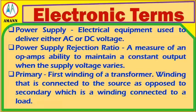Power Supply: electrical equipment used to deliver either AC or DC voltage. Power Supply Rejection Ratio: a measure of an op-amp's ability to maintain a constant output when the supply voltage varies. Primary: the first winding of a transformer; the winding that is connected to the source, as opposed to the secondary, which is a winding connected to a load.